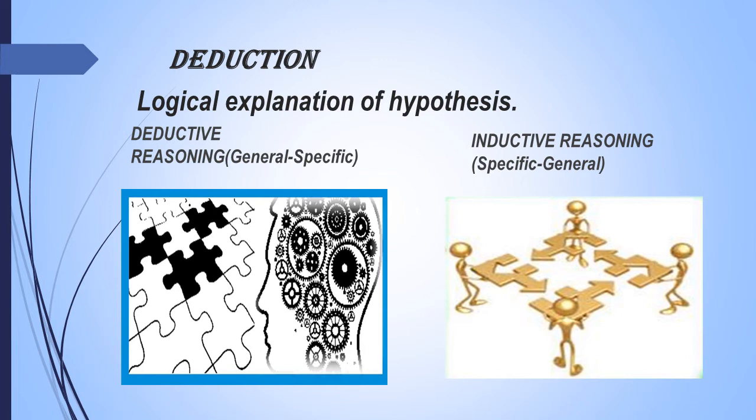And second is inductive reasoning. In this case, we go to the general conclusion. For example, pigeons, parrot, sparrow, all our birds, all have wings and can fly. Then we say that all the birds have wings and can fly.